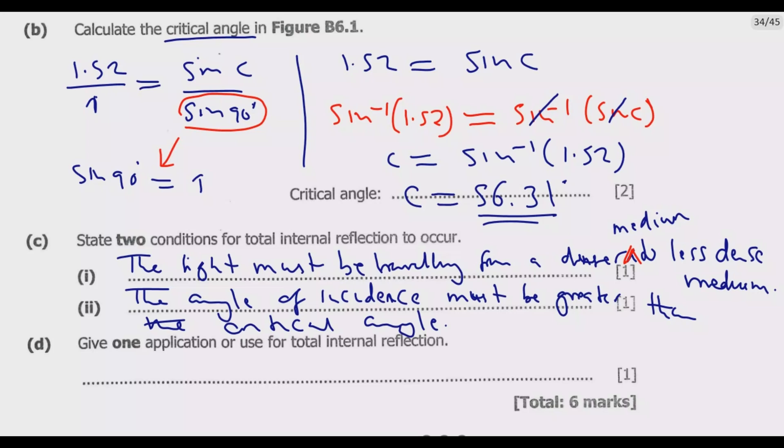Question D: Give one application or use for total internal reflection. One application for total internal reflection is fiber optics, where light is transmitted through optical fibers by total internal reflection. You can say fiber optics is such a use.